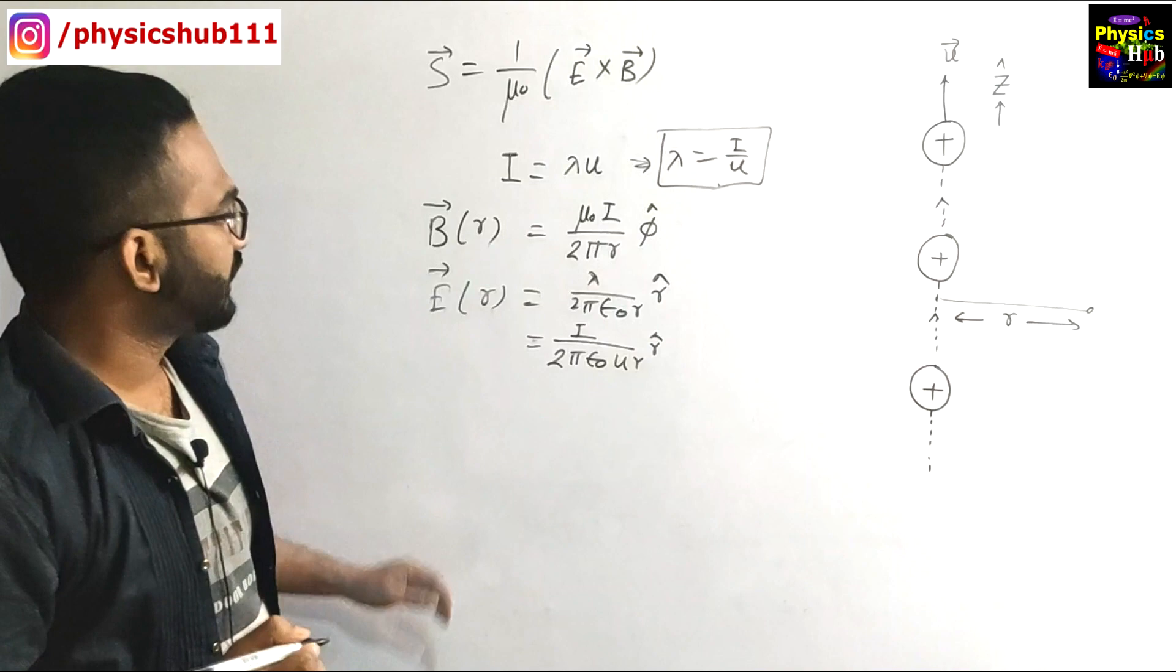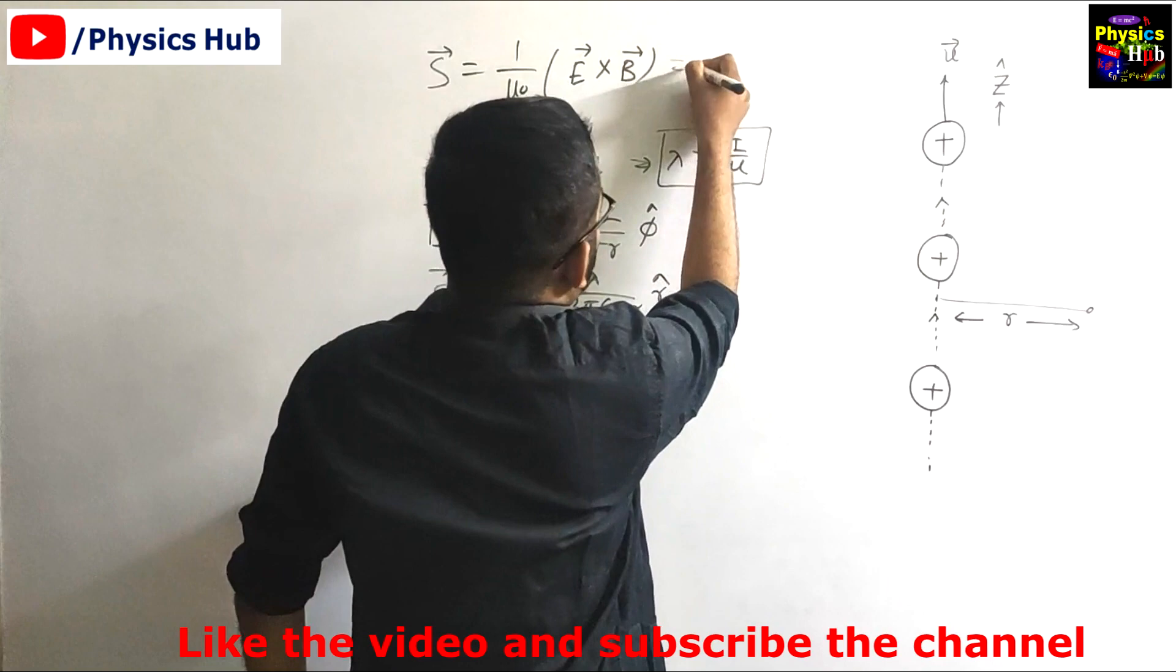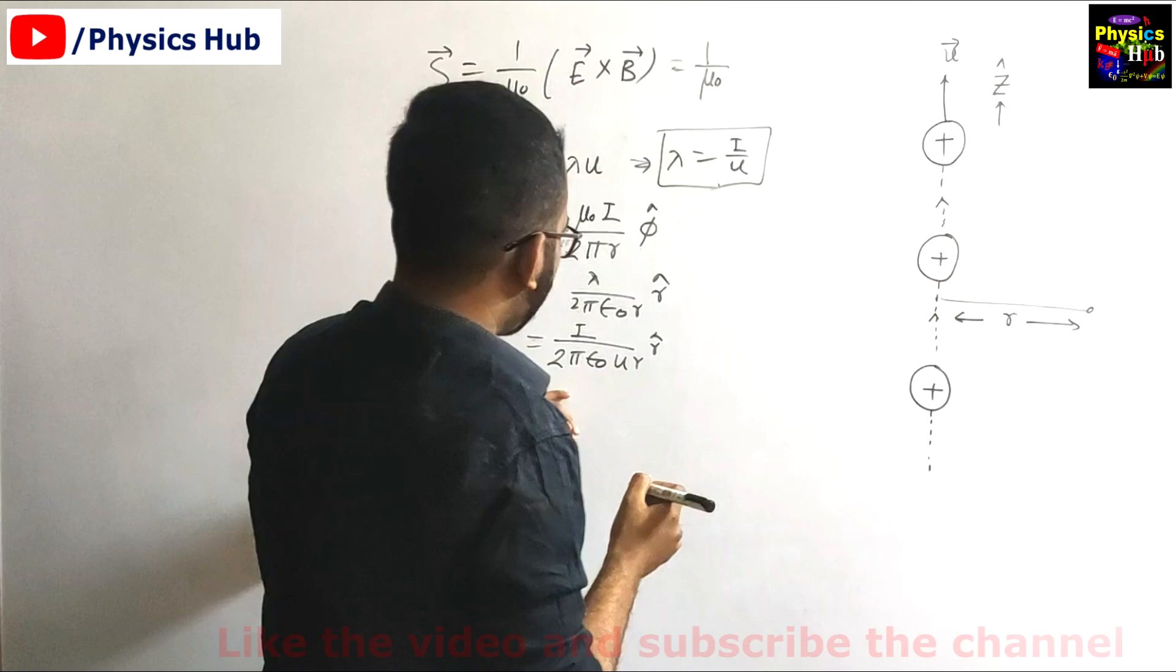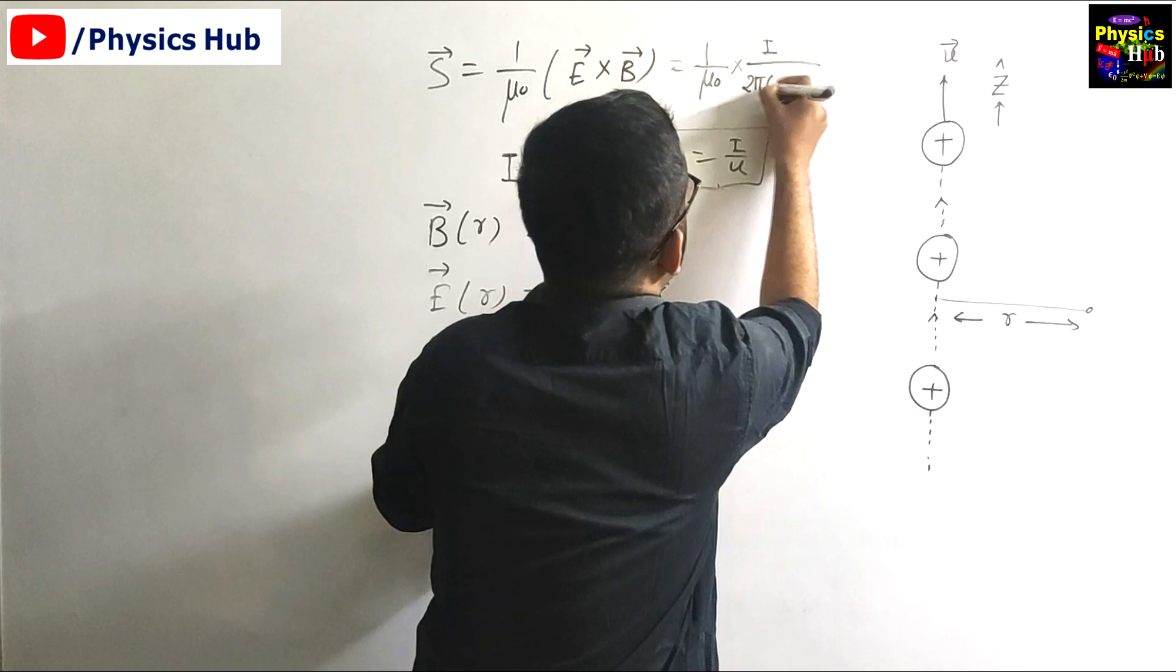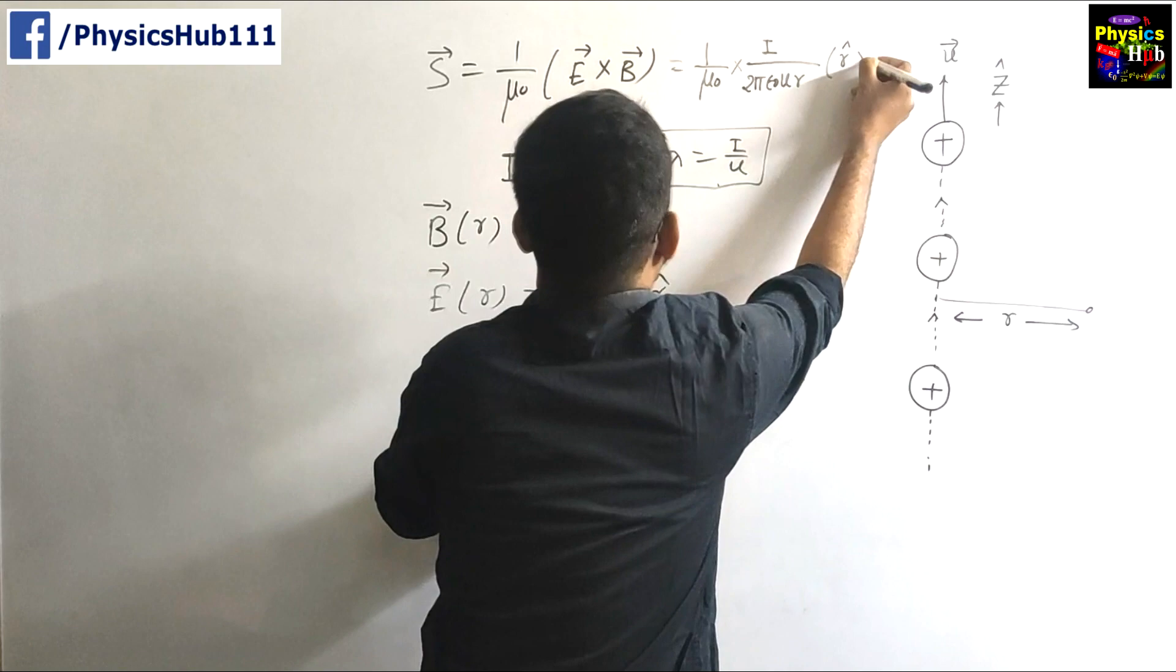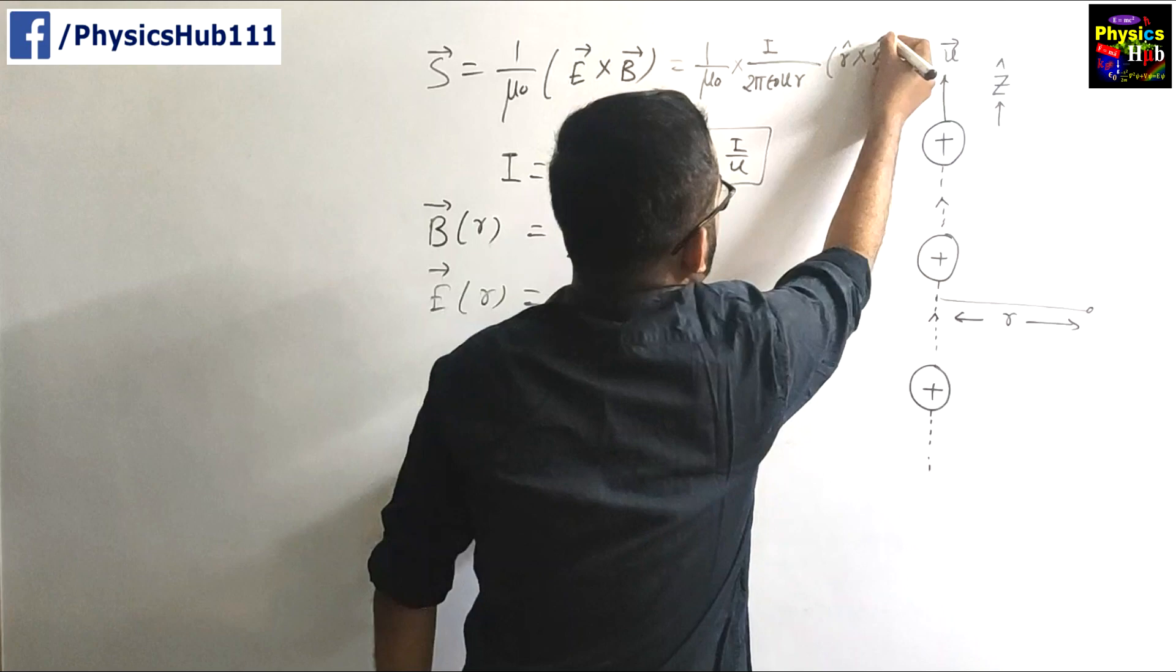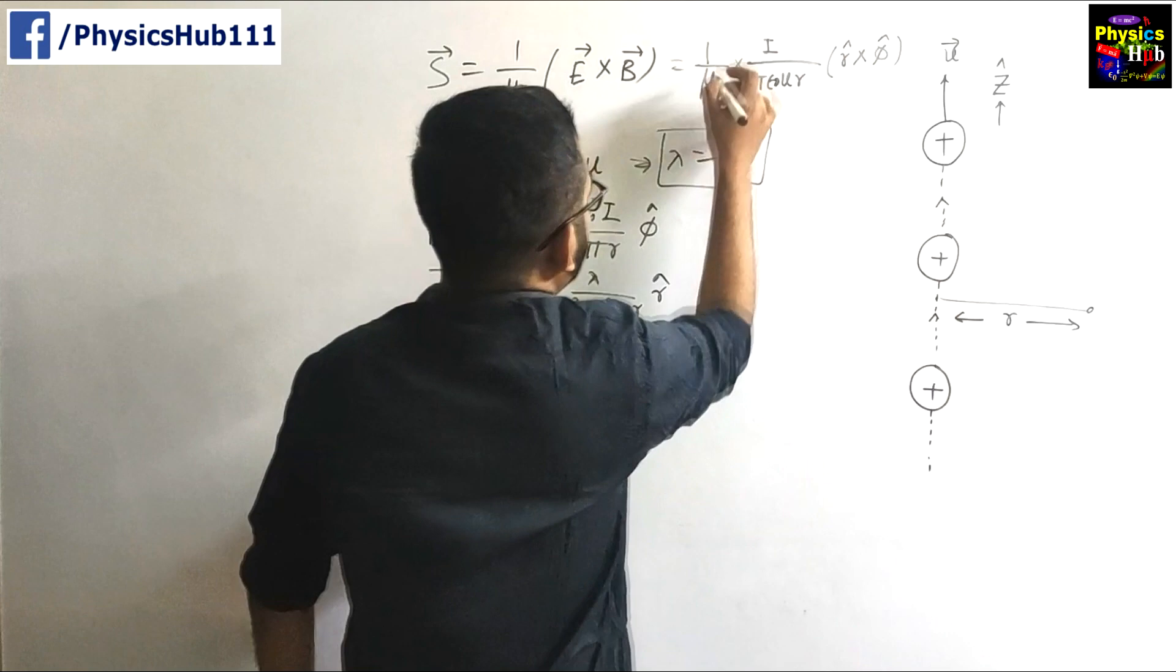So we can easily put this into the expression 1 by mu naught E cross B. This will give you I by 2 pi epsilon naught u r, all of these things are constant. E is along r cap direction, cross this B, which is along phi cap direction. But these constants mu naught I by 2 pi r we have to consider.